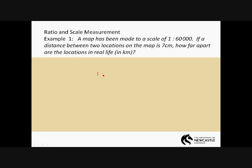Let's look at that first. 1 to 60,000. The first number is the scaled number. It refers to the dimension that's on the map, in the drawing or the model, whatever the question is. The 60,000 represents real life, or the actual value of the dimension.